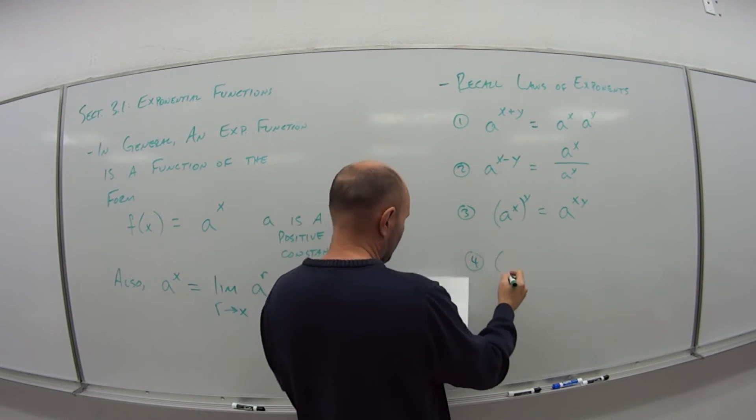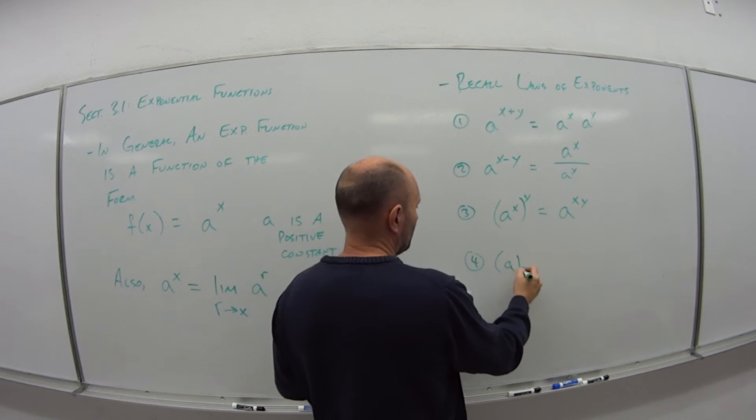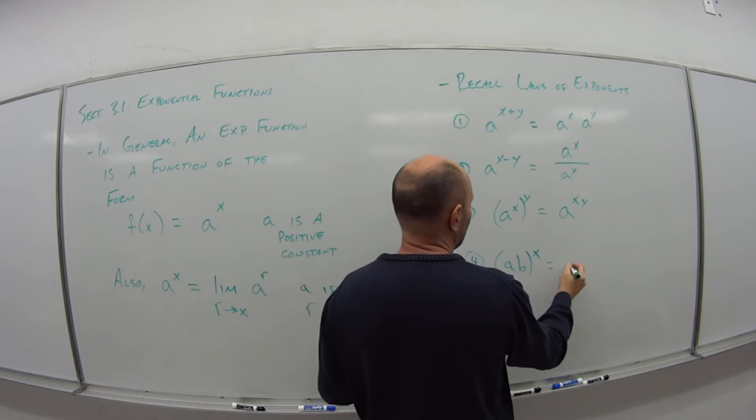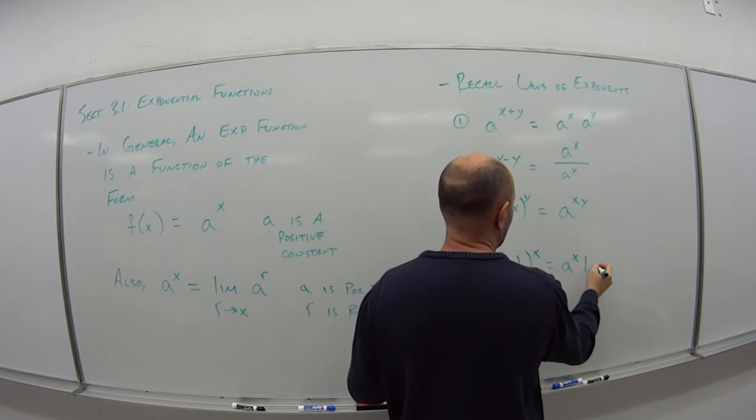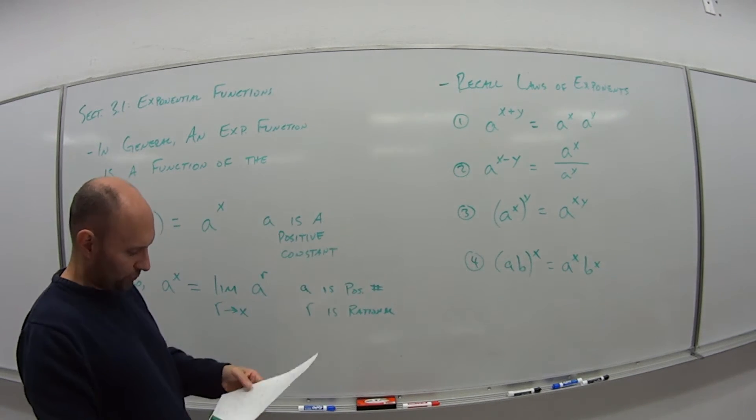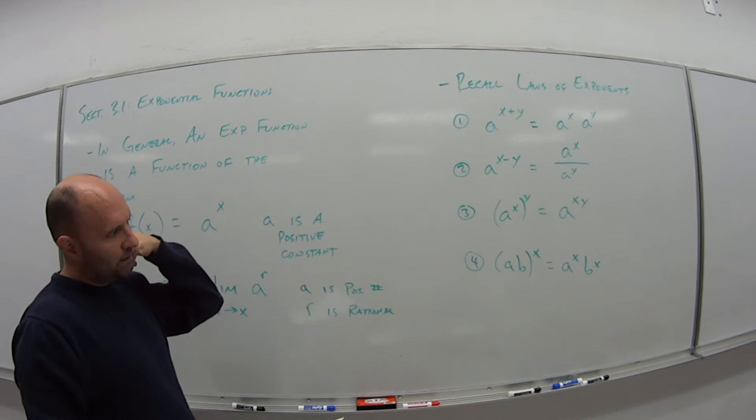And the fourth one is that if I have two numbers a, b all raised to the x power, this is the same as a to the x times b to the x. I can bring that exponent or I would have to bring that exponent into each number.